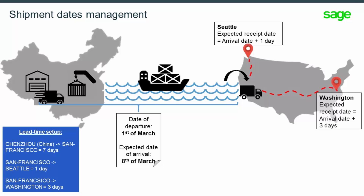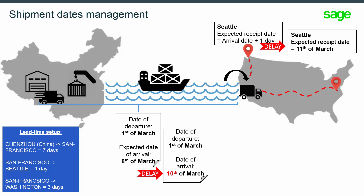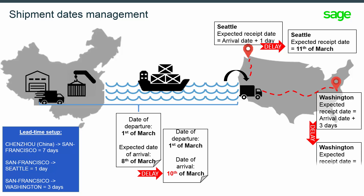The transport lead time is not the same for each site. If the arrival date of the boat is rescheduled to two days later, the expected receipt date in Seattle will be recalculated to the 11th of March. One day later, taking into account the road transportation lead time of one day between San Francisco and Seattle, the expected receipt date in Washington will be recalculated to the 13th of March, because the transport lead time is three days to reach Washington from San Francisco via roadway.